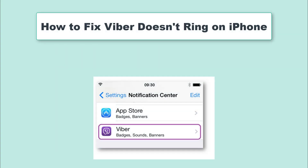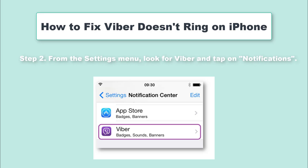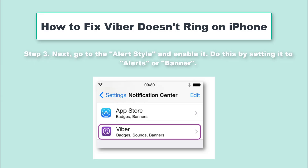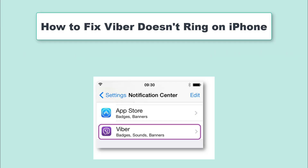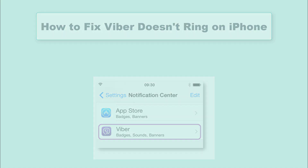Viber doesn't ring on iPhone — there is no way you will know that some message has arrived or whether a friend is trying to reach you. Step 1: Solve this by opening the Settings app on your iPhone. Step 2: From the Settings menu, look for Viber and tap on Notifications. Step 3: Next, go to the Alert Style and enable it by setting it to Alerts or Banner. This should allow notifications that will let you hear every sound from your Viber app.